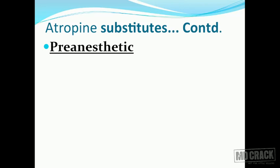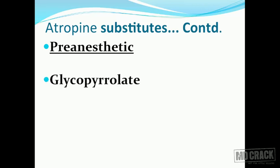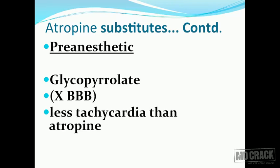There is an atropine substitute useful as pre-anesthetic medication. Atropine is useful as pre-anesthetic medication because it prevents reflex bradycardia, decreases secretions, relaxes smooth muscles, prevents laryngospasm, prevents nausea and vomiting, and decreases gastric hydrochloric acid secretion. In place of atropine, we have a newer agent called glycopyrrolate, which is very widely used as pre-anesthetic medication. Glycopyrrolate does not cross the blood-brain barrier, so you don't have to worry about CNS adverse effects. Glycopyrrolate also produces less tachycardia compared to atropine, and this is why it is more preferred as a pre-anesthetic medication.